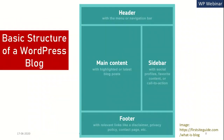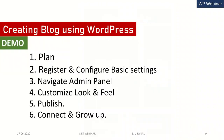Before creating a WordPress blog, we should understand its basic structure. At the top is the header with a menu or navigation bar. Then there is a main content area, and on the right or left there is a sidebar containing social profiles, favorite content, call to action, and widgets. At the bottom of the page is a footer, where you can add the disclaimer, privacy policy, and contact page.